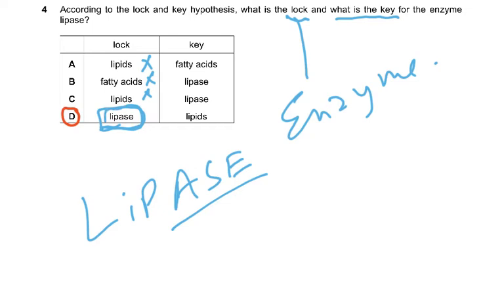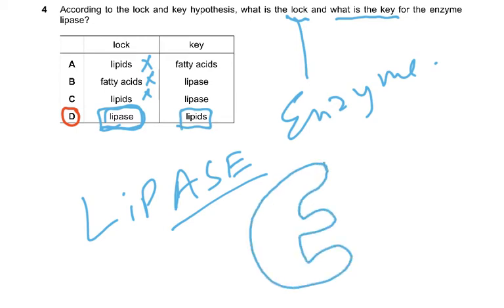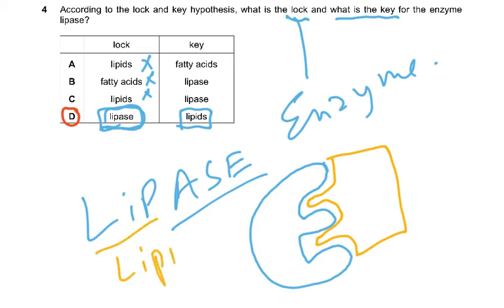So the enzyme lipase is the lock, and what fits into it — the key — is only going to be a lipid. Lipase acts on lipids. It's very easy to understand if you remember that and make it a habit to be clear about it.